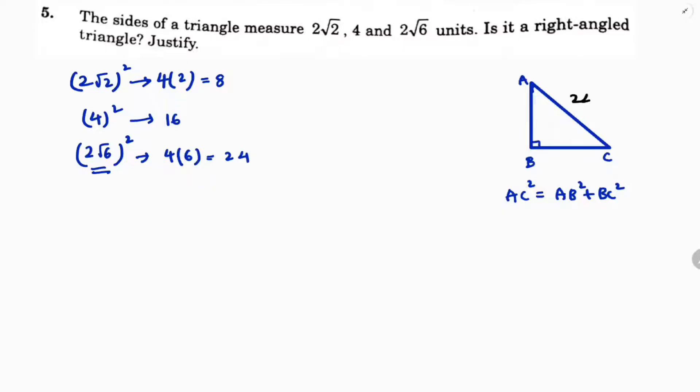So hypotenuse I will take as 2√6. The other side I can take one side as 2√2, the other one is 4.